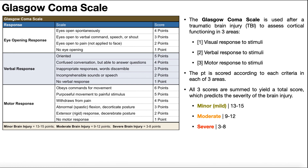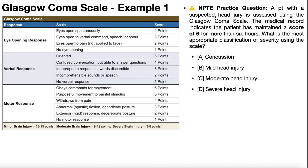Let's look at a practice NPTE question. A patient with a suspected head injury is assessed using the Glasgow Coma Scale, and the medical record indicates the patient has maintained a score of six for more than six hours. What is the most appropriate classification of severity? Since six falls between three and eight, this would be classified as a severe brain injury.